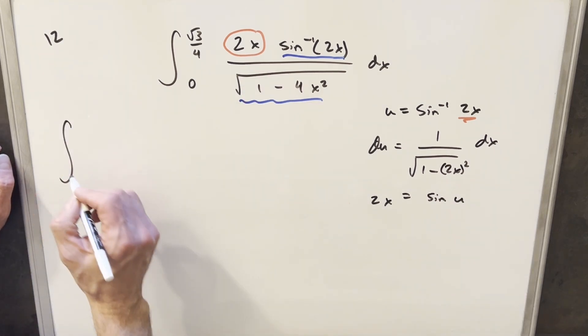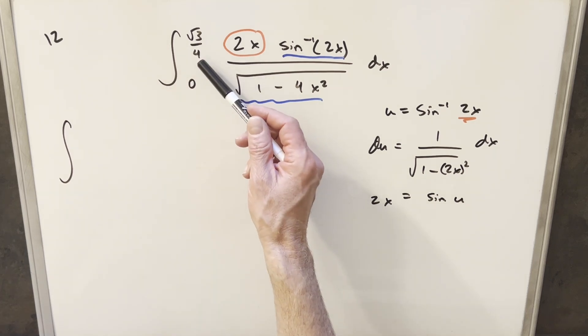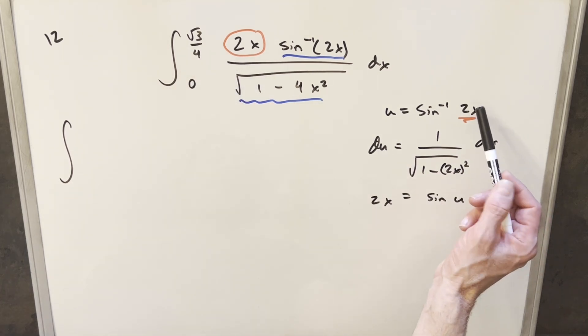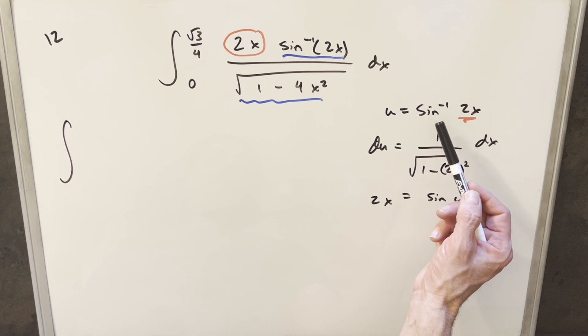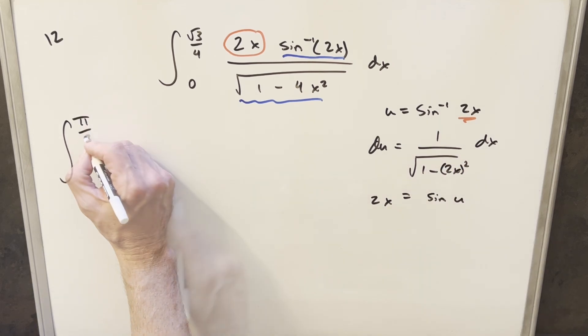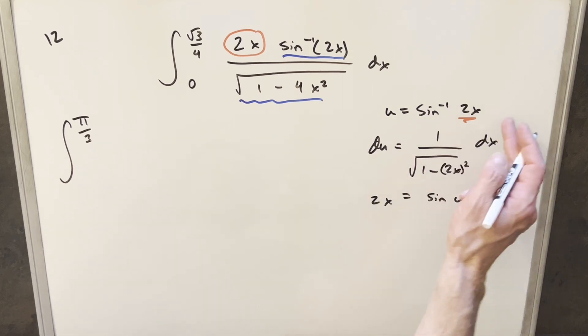So let's go ahead with this and update our bounds to start. Plugging in square root of 3 over 4 in here, 2 times that gives me square root of 3 over 2. Arc sine of square root of 3 over 2 is just pi over 3. Then plugging in 0, arc sine of 0 is just 0.